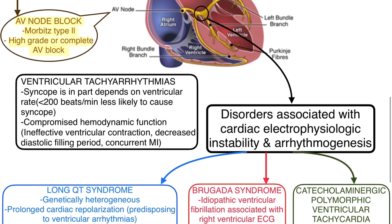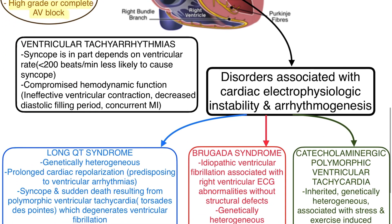The next reason for cardiac syncope is ventricular tachyarrhythmias. Syncope depends in part on ventricular rate. If ventricular rate is low, it leads to low cardiac output and eventually syncope. Less than 200 beats per minute is less likely to cause syncope. Also, compromised hemodynamic function seen with ineffective ventricular contractility, decreased diastolic filling period, and concurrent myocardial infarction can contribute.